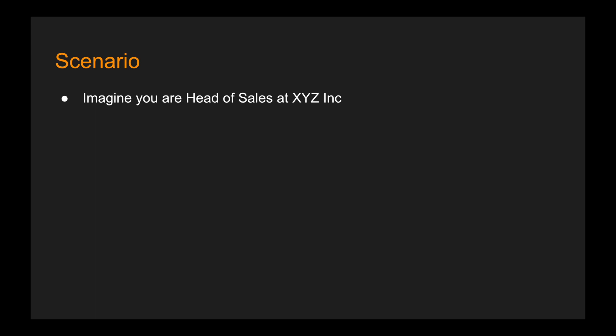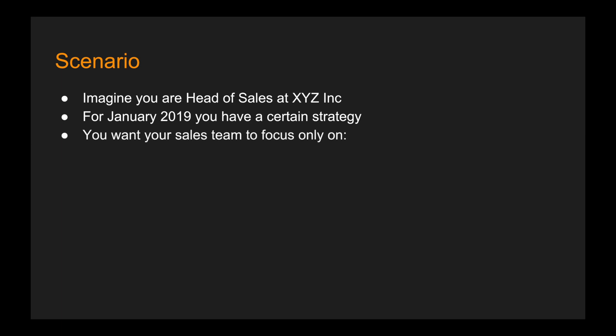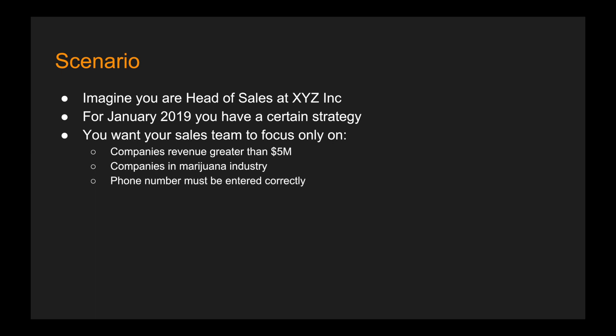Imagine you're the head of sales at XYZ Incorporated, and for January 2019 you have a certain strategy. You tell your sales team to focus only on companies with revenues greater than 5 million, companies in the marijuana industry. You also want to make sure that the accounts or leads your sales team is creating have valid phone numbers — this has been a problem where leads look really good but the phone number was not saved correctly, maybe the area code is missing. You can create validation rules to enforce all of this.